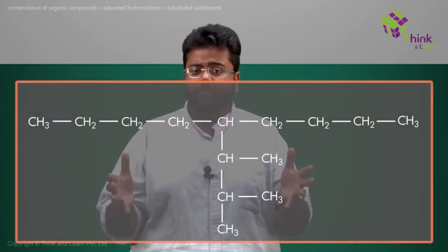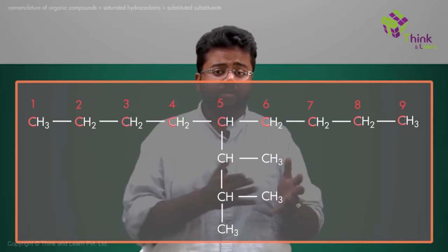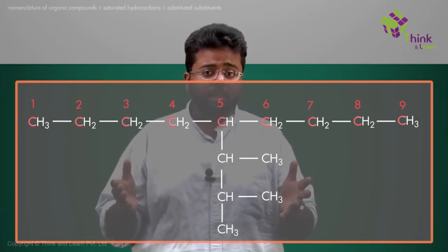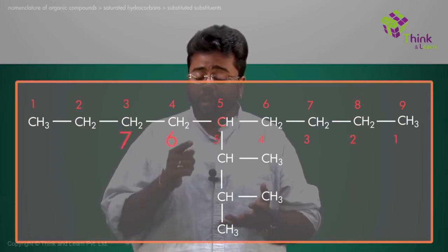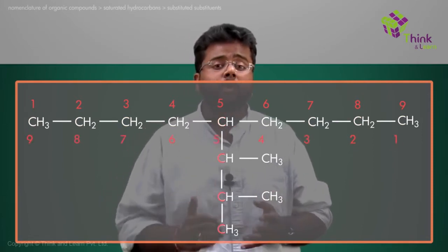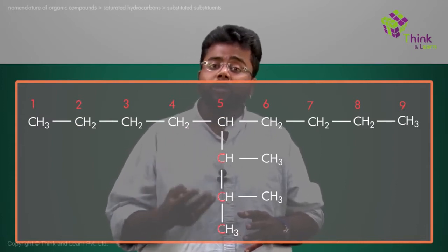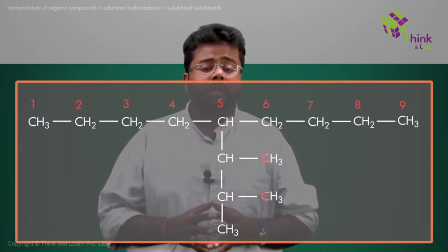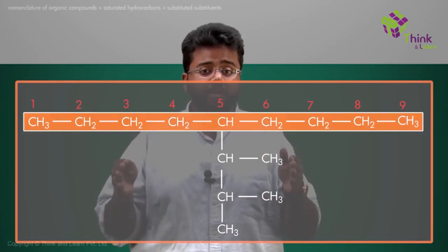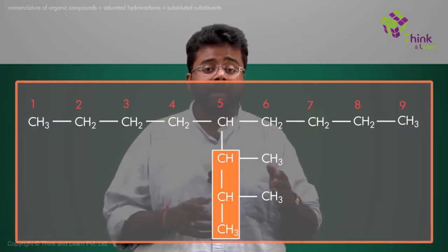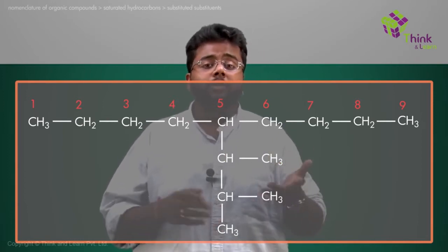I have a compound something like this. You see there are nine carbons in the straight chain, and on the fifth carbon — either from the right side or the left side — you have three more carbons attached. And on the first two carbons of those three carbons, you have one carbon each. So that means you have a parent chain, a substitution, and those substitutions have one substitution each.